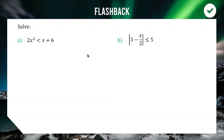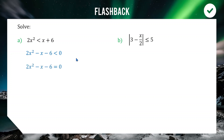For the quadratic inequality, we move everything to one side to get 2x² − x − 6 < 0. We solve the quadratic equation to find the two x-intercepts by setting it equal to zero. Factorizing gives us our two solutions: x = 2 and x = −3/2.